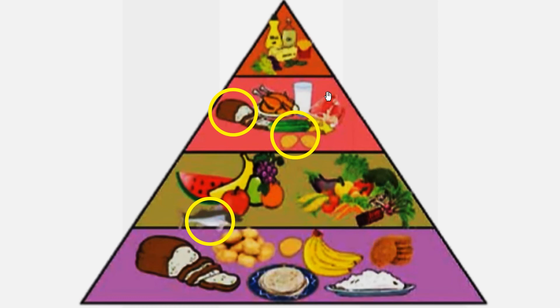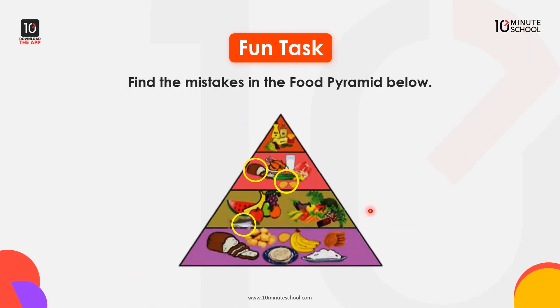In the food pyramid, there are dairy products, potatoes, and bread, but there is no grain type of food — so this is the mistake in the food pyramid.